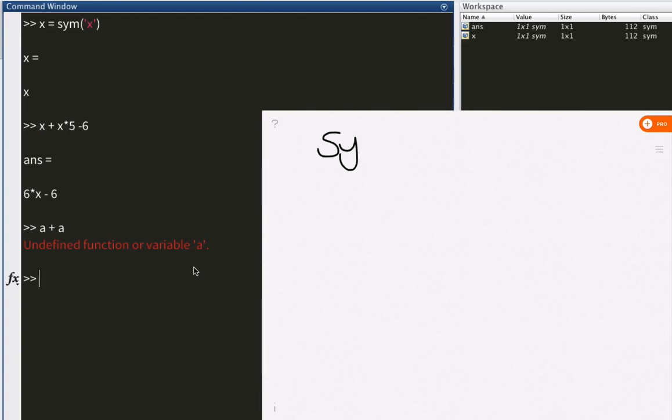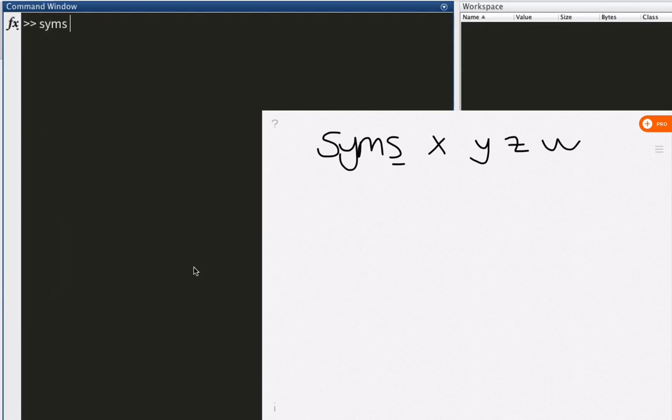You would use this. Syms, not the game, but with s x at the end. And you would just type out your variables. x, y, z, and w for the sake of craziness. Syms, x, y, z, w. You see?